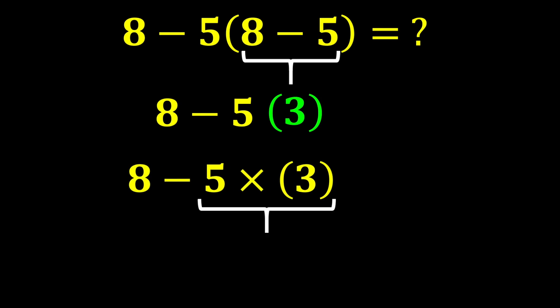In this expression, we now have subtraction and multiplication. Since multiplication has a higher priority than subtraction, we perform the multiplication first. 3 multiplied by 5 gives us 15. And in the end, 8 minus 15 gives us negative 7, and negative 7 is our final answer.